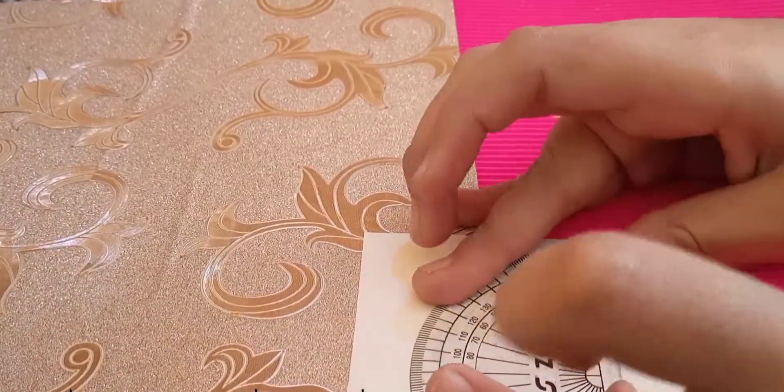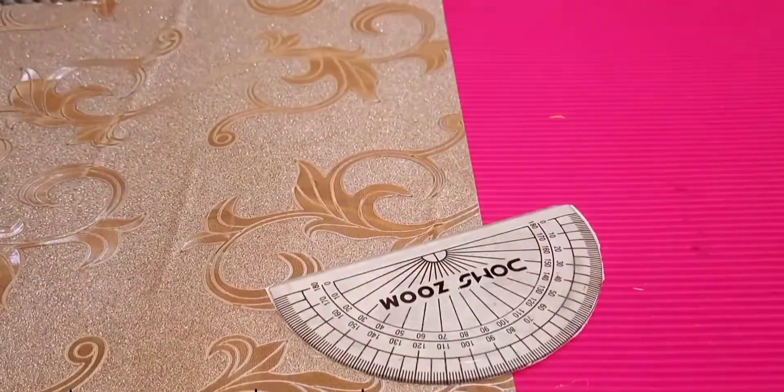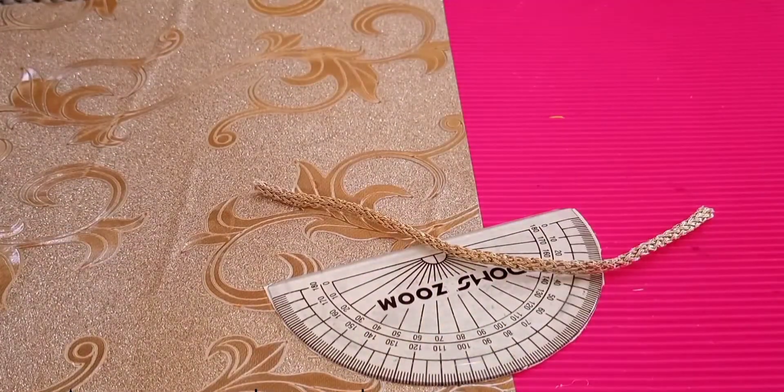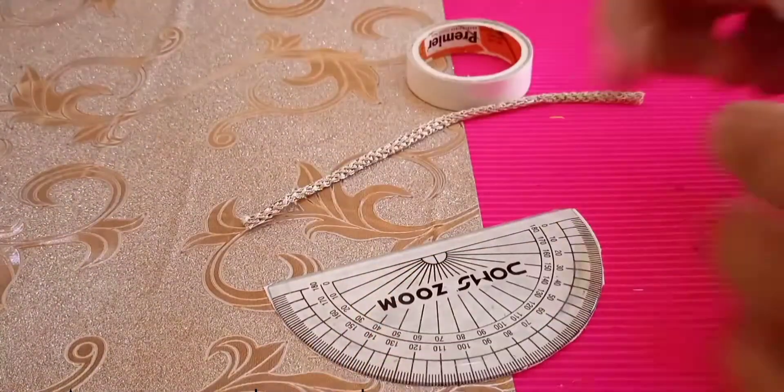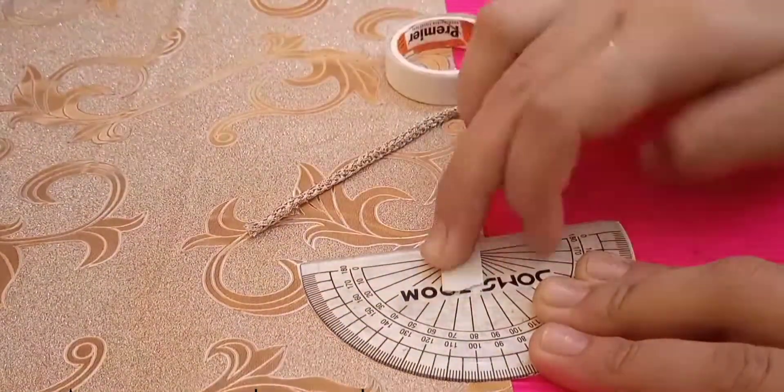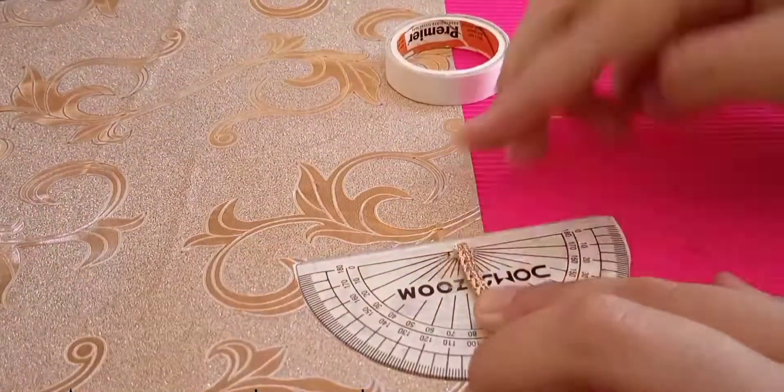After this you have to cut the excess sides of paper. Now by using a rope or a thread you have to stick it in the center of the protractor as shown in this video.